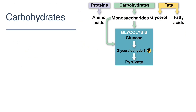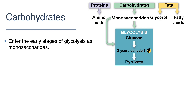Let's start by exploring how carbohydrates other than glucose are metabolized for energy. Carbohydrates will enter the early stages of glycolysis as monosaccharides. The starch in pasta, for example, will be digested and hydrolyzed into glucose in the digestive system. That glucose then just enters cellular respiration at the very start of glycolysis.